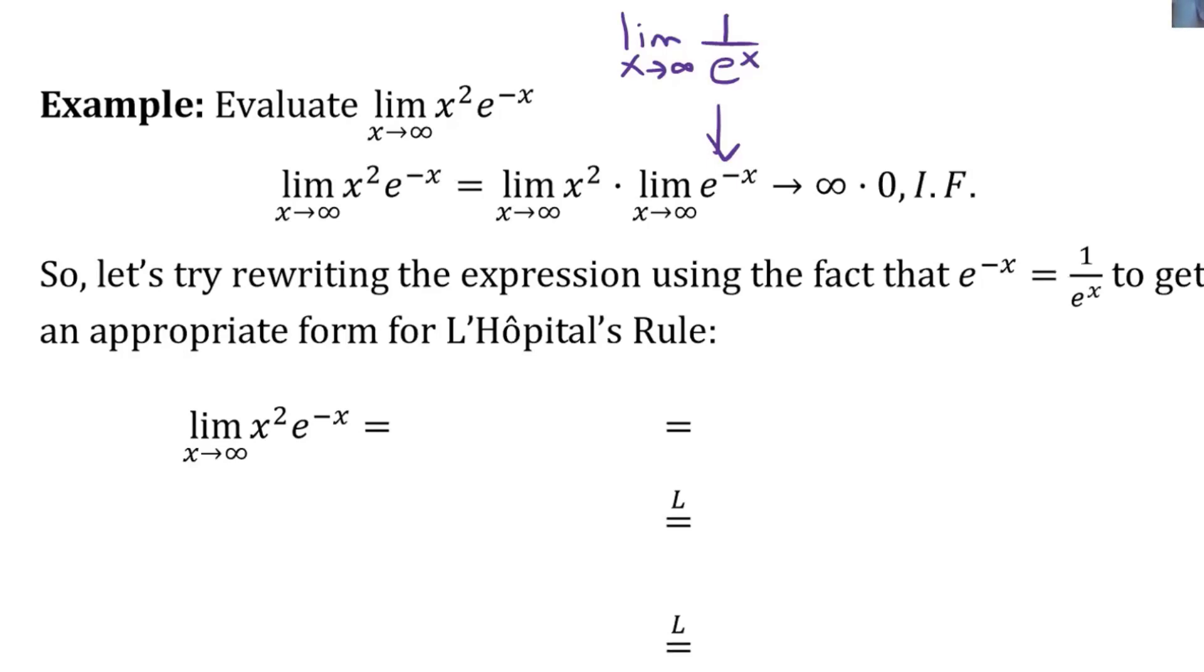But using the fact that e to the negative x does equal 1 over e to the x, we can actually rewrite this so that L'Hopital's rule does apply. We say, okay, this is x squared times 1 over e to the x.